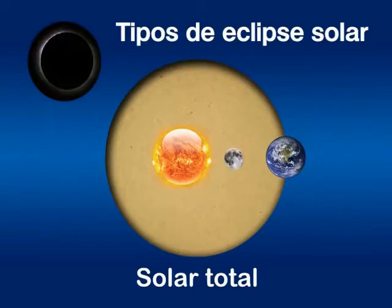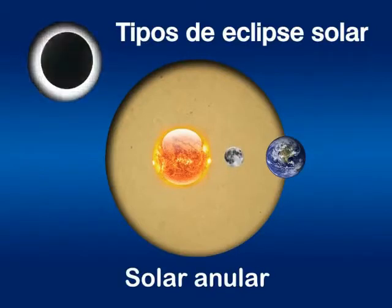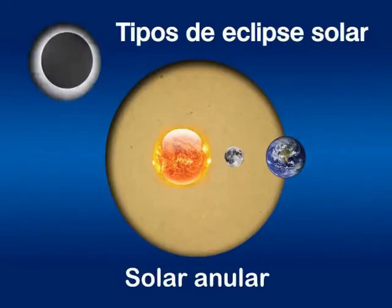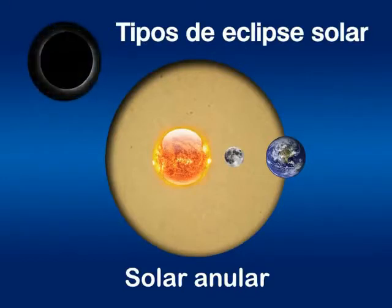Y el eclipse anular, que ocurre cuando la Luna se encuentra cerca del apogeo y su diámetro angular es menor que el solar, de manera que en la fase máxima del eclipse parece que es un anillo.